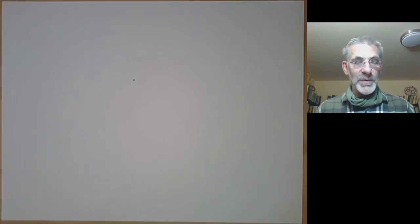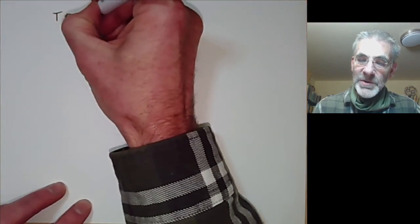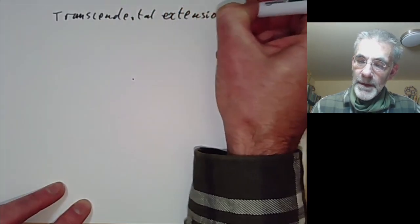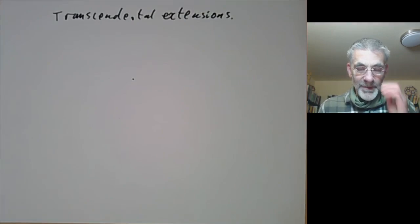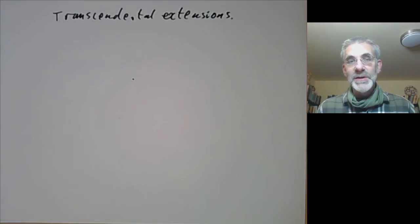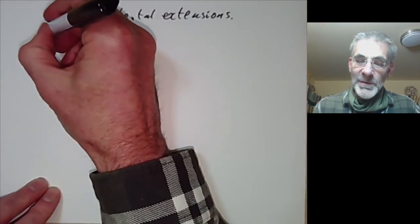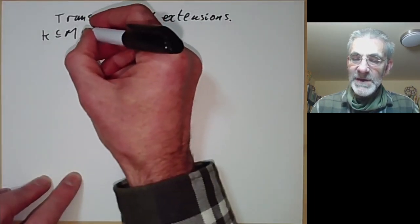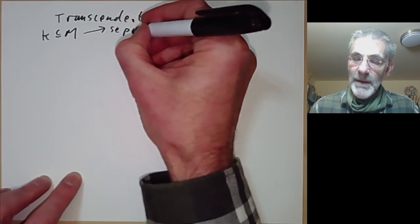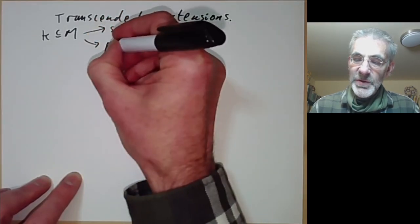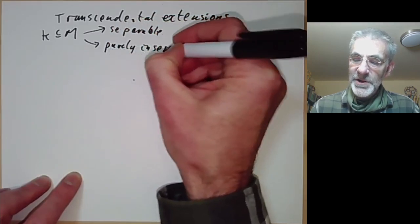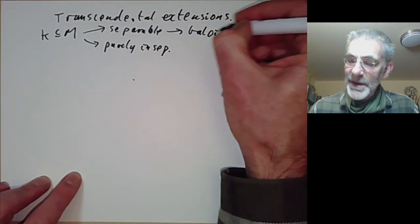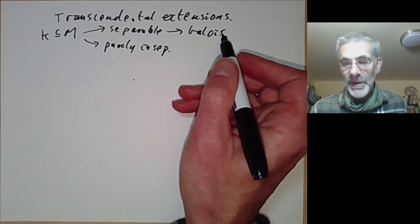This lecture is part of an online course in Galois Theory and will be about Transcendental Extensions. A transcendental extension is just an extension that isn't algebraic. Let's first quickly recall that if we've got an algebraic extension, we can more or less understand it completely. First of all, it can be split up into a separable extension and a purely inseparable extension. Separable extensions can be understood by turning them into Galois extensions and then applying Galois Theory and working with Galois groups.